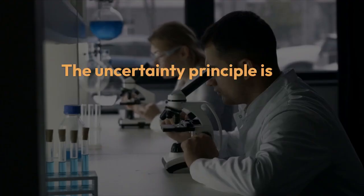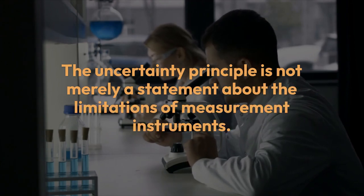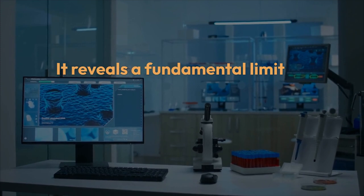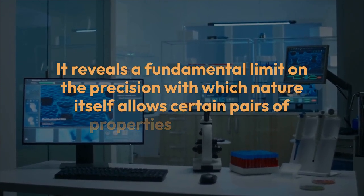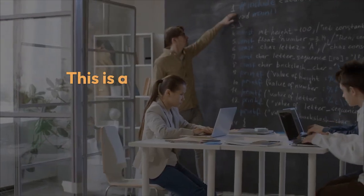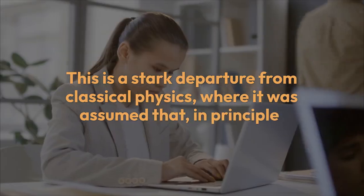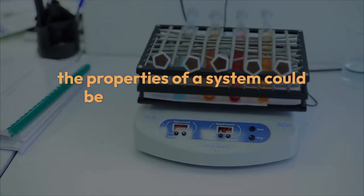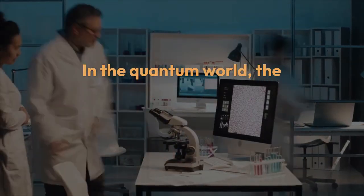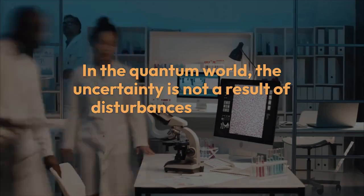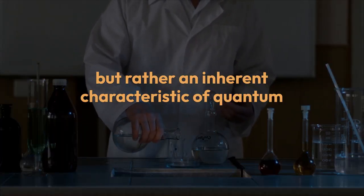The Uncertainty Principle is not merely a statement about the limitations of measurement instruments. It reveals a fundamental limit on the precision with which nature itself allows certain pairs of properties to be known. This is a stark departure from classical physics, where it was assumed that, in principle, every property of a system could be measured to arbitrary precision. In the quantum world, the uncertainty is not a result of disturbances caused by measurement, but rather an inherent characteristic of quantum systems.